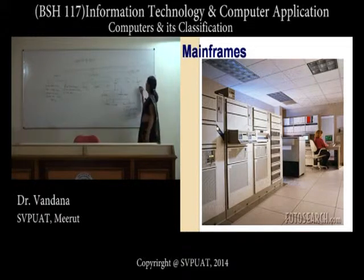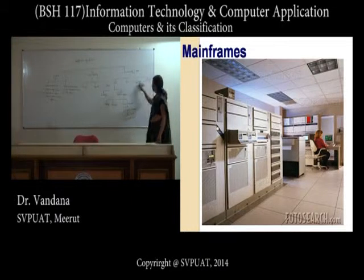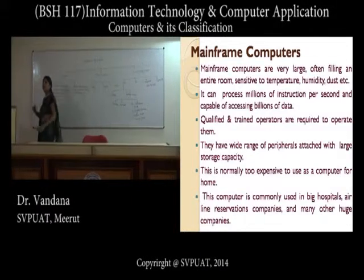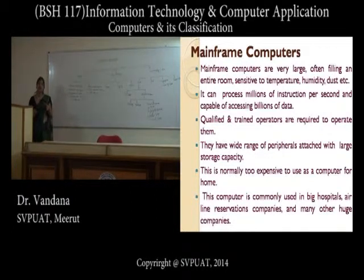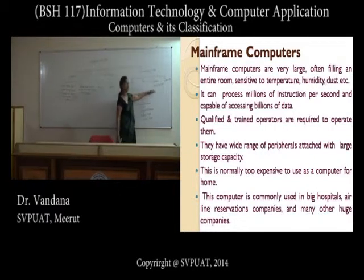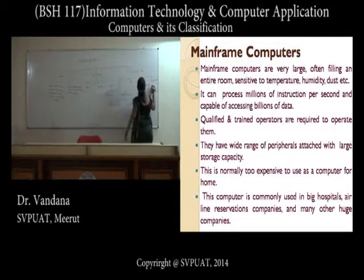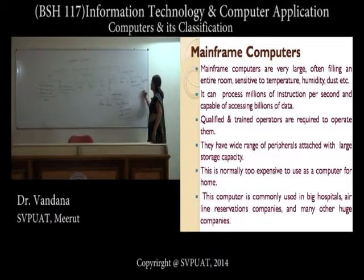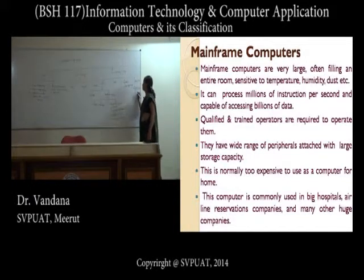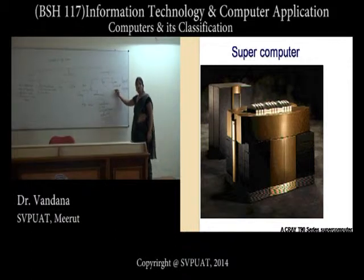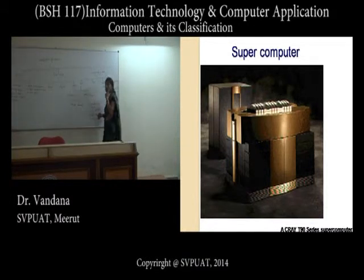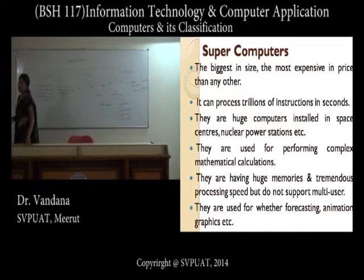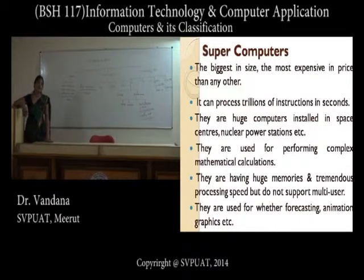Mainframe computers can be termed ultra high-speed computers, very efficient compared to minicomputers. They may allow 100 to 1000 users to work simultaneously and are generally used as servers or clusters of workstations. Supercomputers are the highest speed computers. The key difference from mainframes is that supercomputers do not permit more than one program to be executed at a time, and are used for highly sensitive calculations.